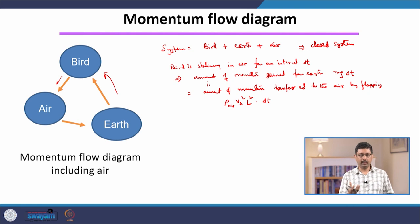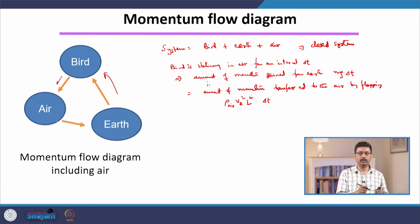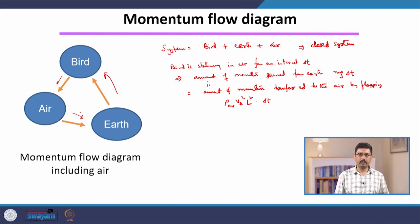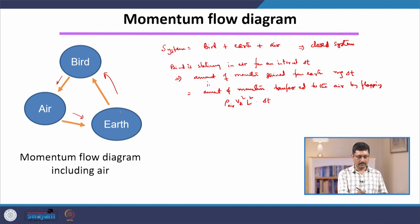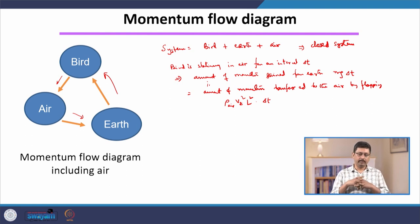What about the momentum gained by the air? If we ignore friction, the air transfers this momentum back to the earth, since air is in contact with the earth. So in our three-component system — bird, earth, air — there is a flow of momentum from one component to another. This is an example of a momentum flow diagram. The power and beauty of applying conservation laws — conservation of momentum, conservation of energy — is that you can ignore many specific details and still gain important insight.